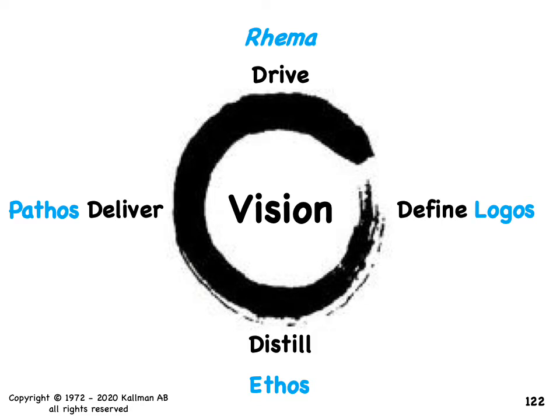So just like with the 4R model, with the 4D model at the team level, you still have the idea of definitions, ethics, passion, and making it all come to life — so that those definitions come to life and fulfill the vision you're trying to achieve.